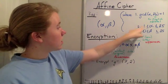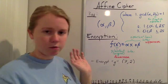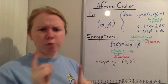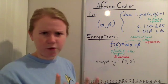Second requirement, alpha must be in between 1 and 25. 1 is okay, 25 is okay, anything in between, real whole numbers, no fractions or anything like that.